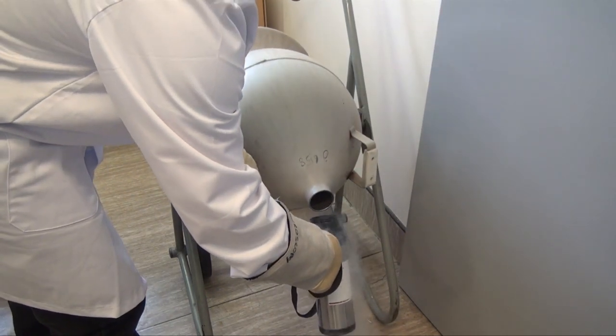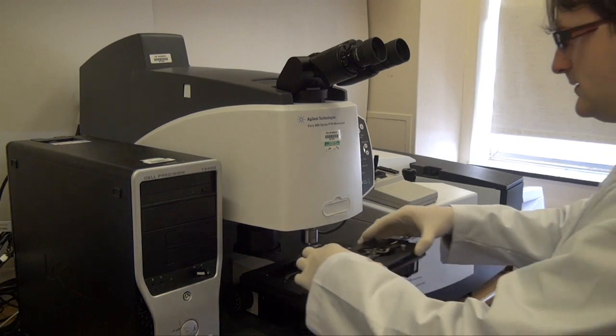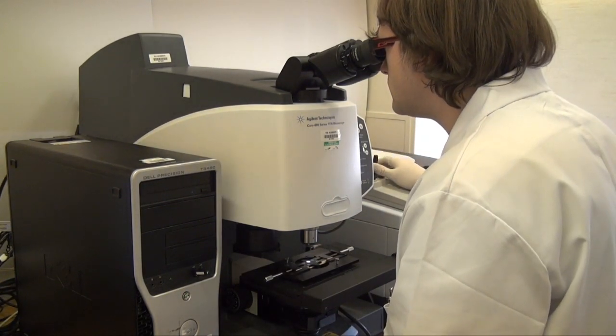A focal plane array detector, cooled by liquid nitrogen, enables us to analyze the different layers simultaneously and create a chemical map of the cross section. The sample is first focused under the beam, where the different layers can be seen.